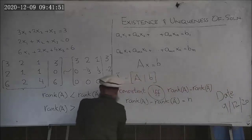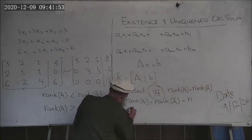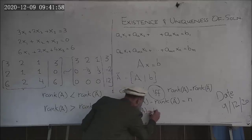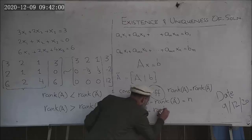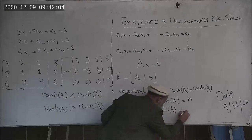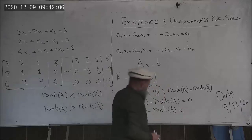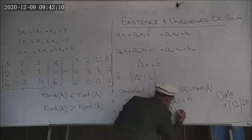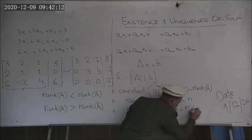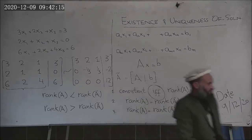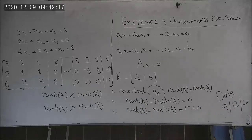The third case: if rank of A equals rank of A-tilde (so a solution exists), and if this common rank R is less than N, the number of unknowns, then there exist infinitely many solutions.